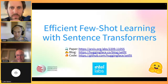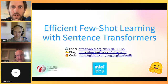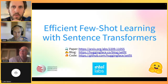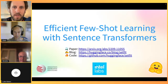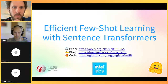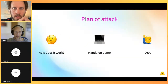This talk is primarily about how to do few-shot learning efficiently using a special type of transformer model called sentence transformers. This is work done together with Intel Labs and UKP in Germany. It breaks down into three things: a paper with nitty-gritty details and experiments, a blog post giving a high-level conceptual summary, and a library called SetFit on GitHub that you can pip install and run in Colab.